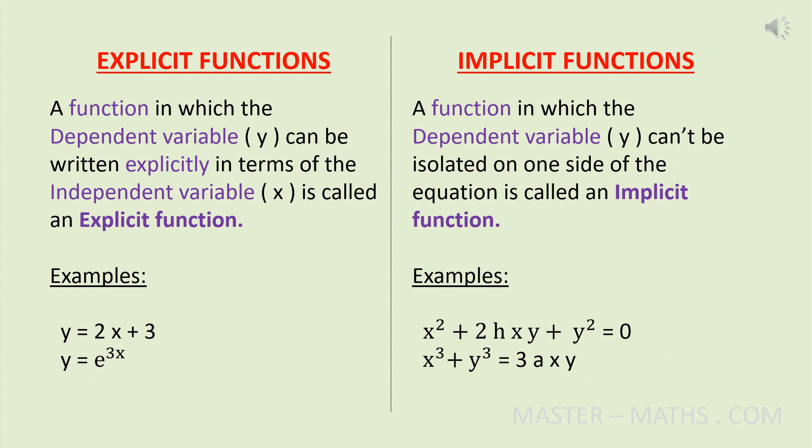Next, we will move on to implicit functions. A function in which the dependent variable y cannot be isolated on one side of the equation is called an implicit function. That is, you cannot separate x and y — they are interdependent. Your equation cannot be written in the format y equals some expression in x; you cannot bring y terms to one side and x terms to the other side. For example, x squared plus 2hxy plus y squared equals 0, or x cubed plus y cubed equals 3axy.